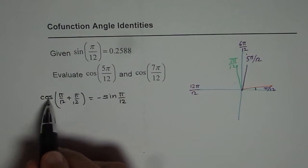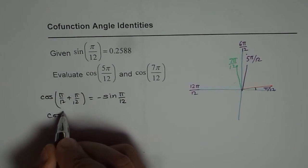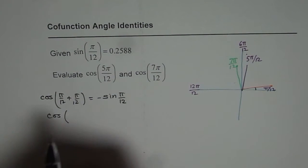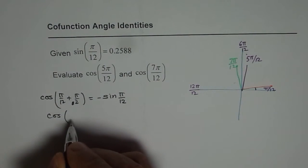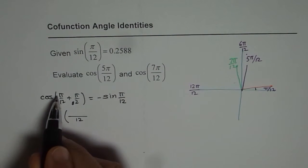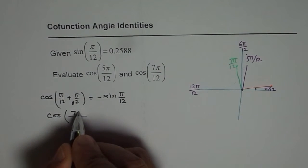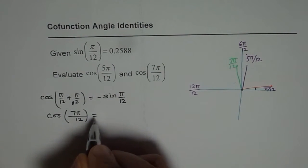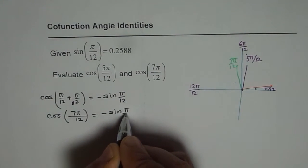Now what is cos of π/12 plus π/2? It is really cos of, I mean π/2 is really, if you multiply this common denominator of 12, you get 1 and here you have to multiply by 6, 6 plus 1, 7. So 7π/12. So cos of 7π/12 is minus sin π/12.